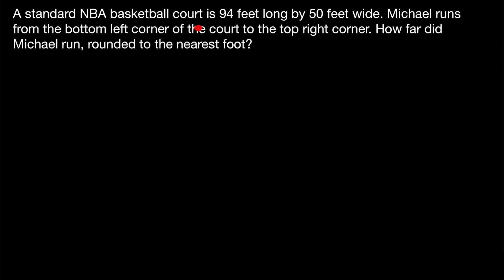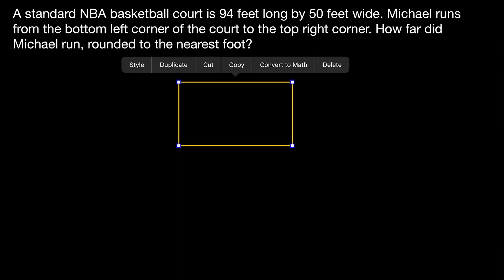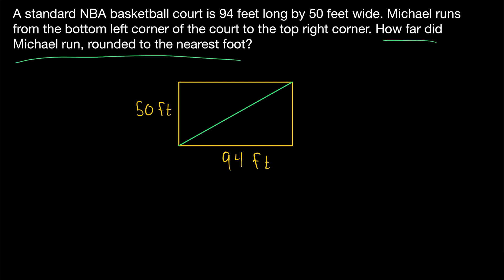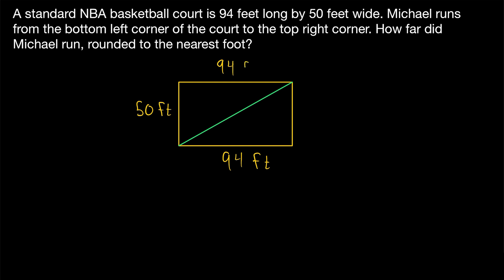A standard NBA basketball court is 94 feet long by 50 feet wide. Michael runs from the bottom left corner of the court to the top right corner. How far did Michael run, rounded to the nearest foot? A basketball court is a rectangle — this side is 94 feet and this side is 50 feet. Running from bottom left to top right is exactly a diagonal of our rectangle. Since we're measuring in feet, those will be the units of our diagonal, so we don't need to include units in the computation.